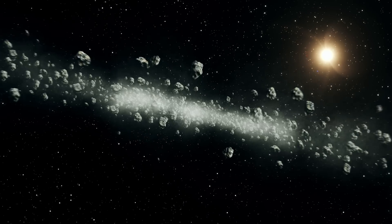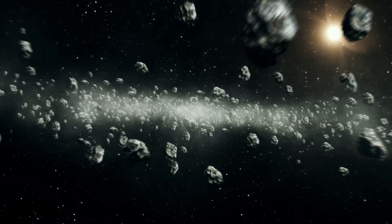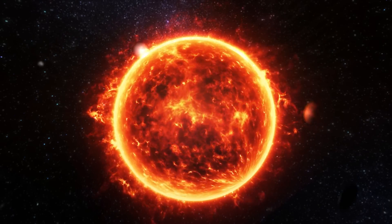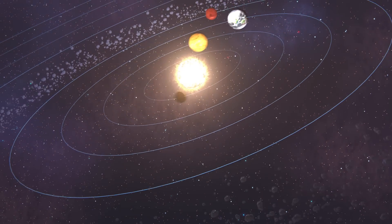The Kuiper Belt is similar to the asteroid belt in that it contains remnants from the early history of the solar system, but it is more like a thick disk rather than a narrow belt.